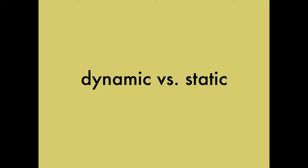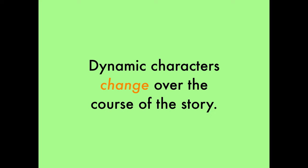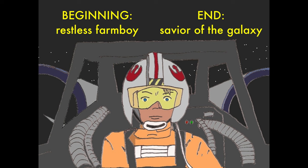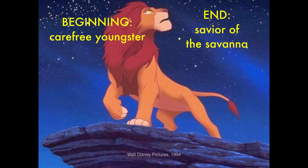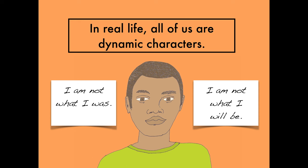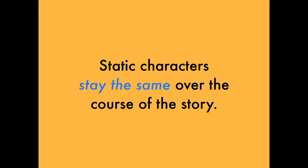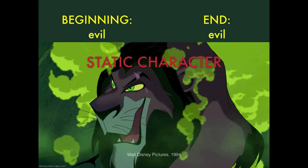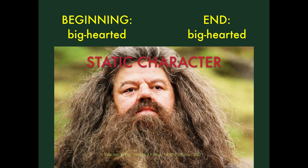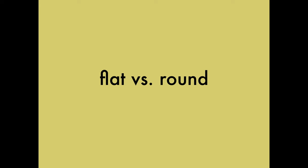Now let's talk about dynamic characters versus static characters. Dynamic characters change over the course of the story. Luke is not the same person at the end of Star Wars as he was at the beginning. Simba's personality has matured over the course of The Lion King — in the beginning he just wanted to play and have fun, but at the end he's willing to do the hard things to live up to his responsibilities. Because all of us are dynamic characters when you stop to think about it. Static characters, on the other hand, don't change over the course of the story. Scar starts out bad in Lion King and stays bad. Hagrid in the Harry Potter series is just as gentle and big-hearted when the series ends as when we met him.